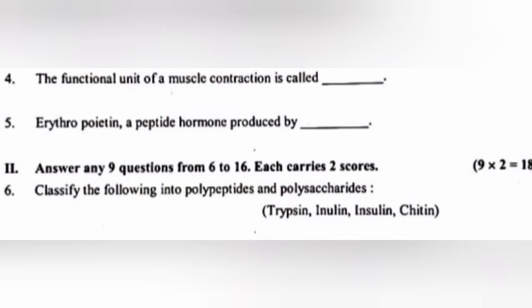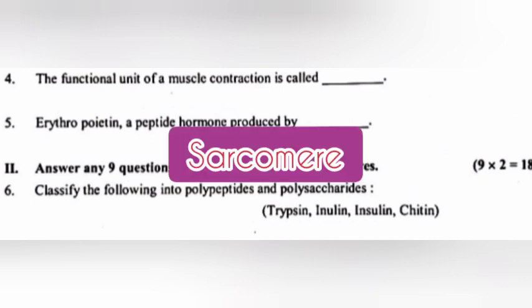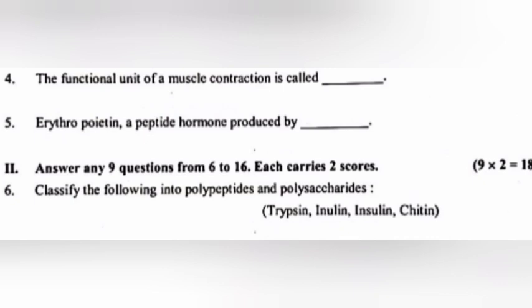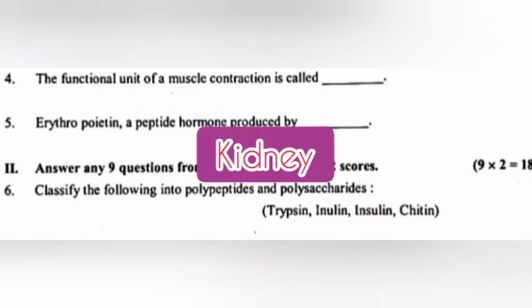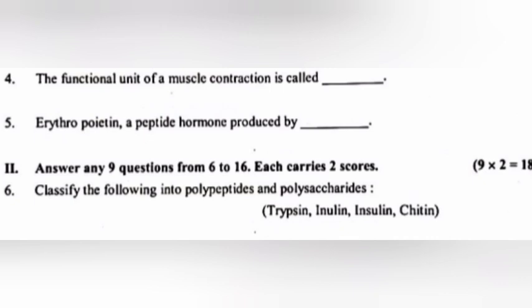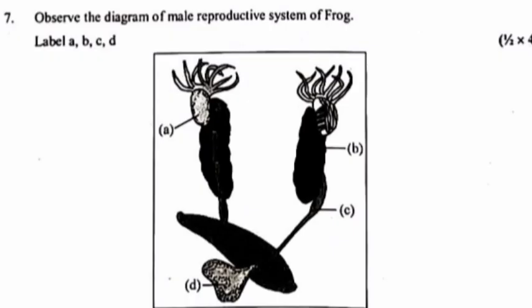4. The functional unit of muscle contraction is called the sarcomere. 5. Erythropoietin, a peptide hormone, is produced by the kidney. 6. Classify the following into polypeptides and polysaccharides — answer: polypeptide: trypsin and insulin; polysaccharide: chitin.